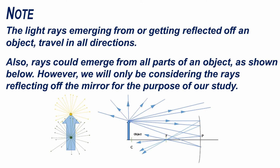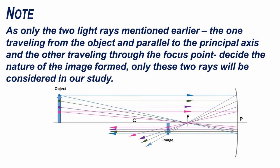The light rays emerging from or getting reflected off an object travel in all directions, and rays could emerge from all parts of an object. However, we will only be considering the rays reflecting off the mirror for the purpose of our study, as only the two light rays mentioned earlier — the one traveling from the object parallel to the principal axis and the other traveling through the focus point — decide the nature of the image formed.